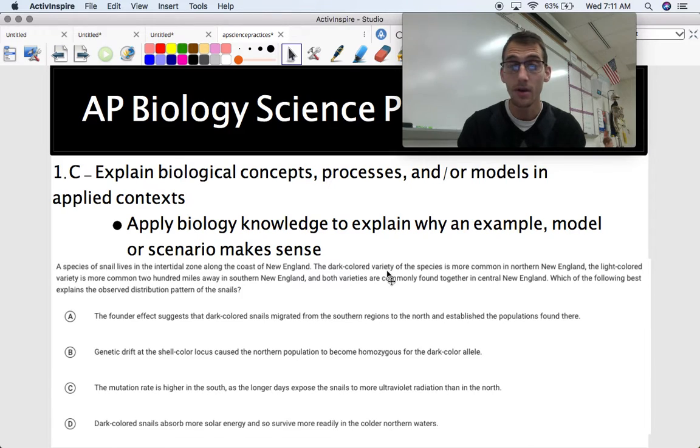So if you want to try this question on your own, go ahead, give it a shot, pause the video. I'm going to keep moving on. And the answer is D. Dark-colored snails absorb more solar energy and so survive more readily in the colder northern waters. So you've got to know something about how this is natural selection adaptation in order to explain why this scenario with the snails and the colors of their shells makes sense.